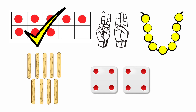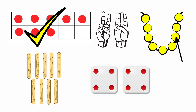Look at the next one: one, two, three, four, five, six — they have shown six fingers, so we should not tick it. Look at the next one: one, two, three, four, five, six, seven, eight, nine — they have given nine beads, so we should not tick the picture.